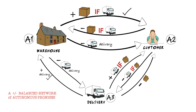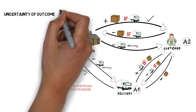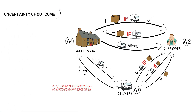Communicating this necessary and sufficient information in a three-body interaction involves a minimum of eight promises, not just two. In other words, there are at least eight ways this outcome could fail by promises not being kept. The uncertainty of the outcome is increased by nearly the square of the number of agents.